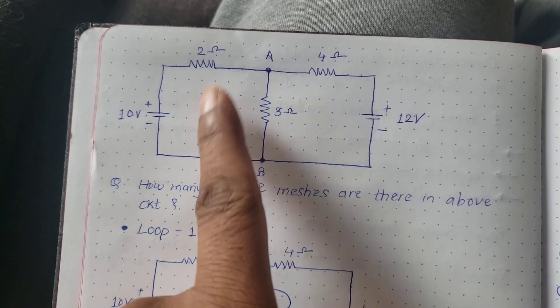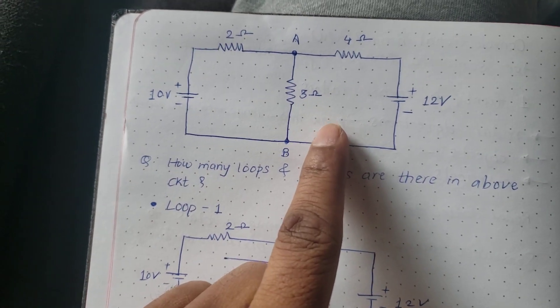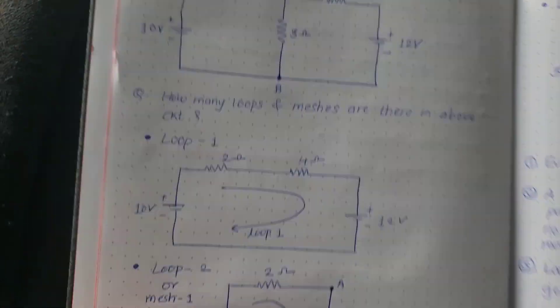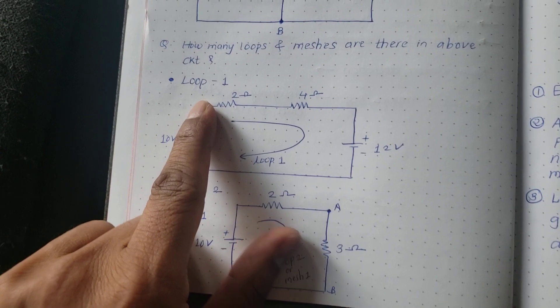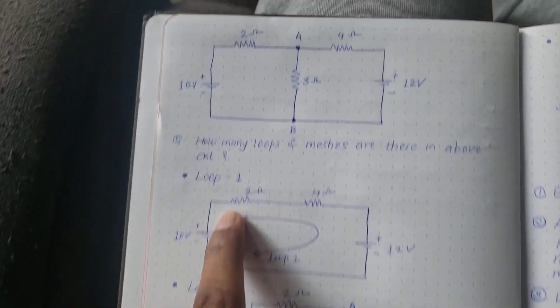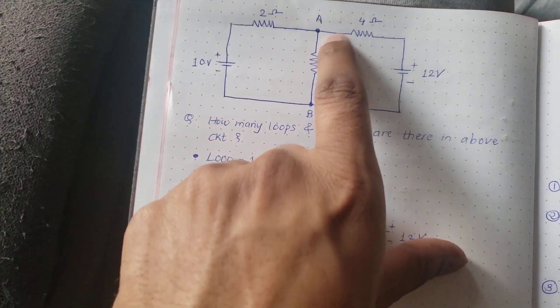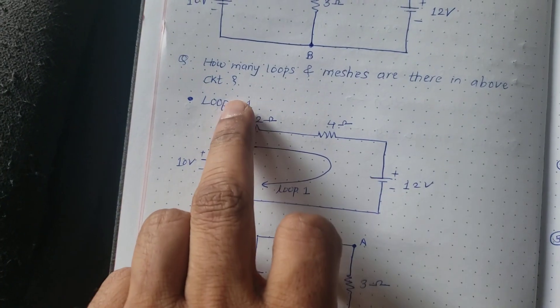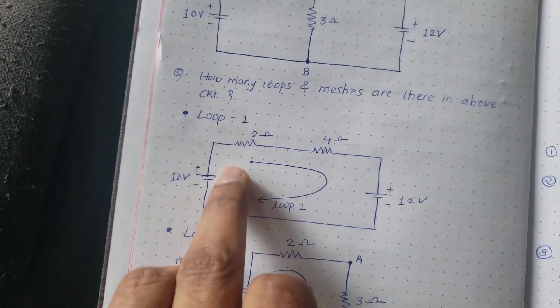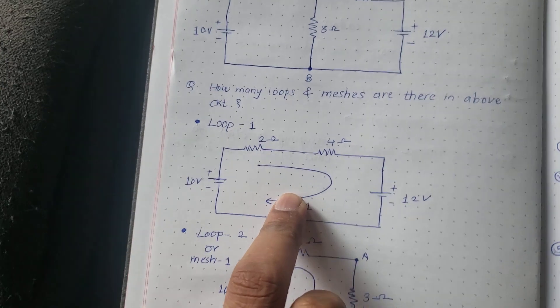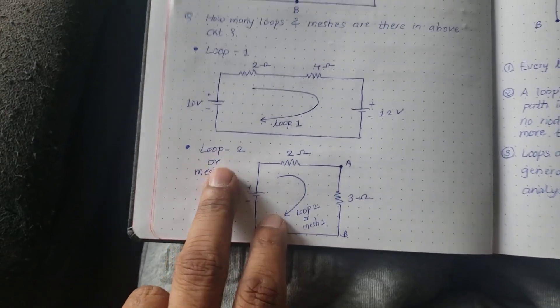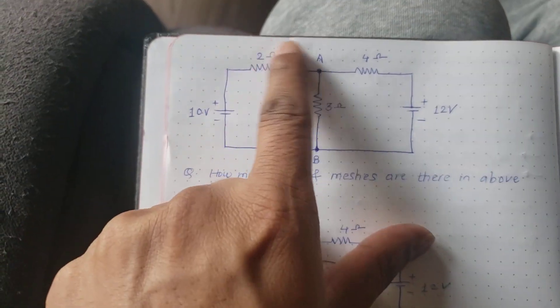This circuit can be drawn as three loops. Can you see loop one? I have just considered the outer circuit. I have not considered the three ohm resistance here, so this becomes a loop. I'm calling that as loop one.